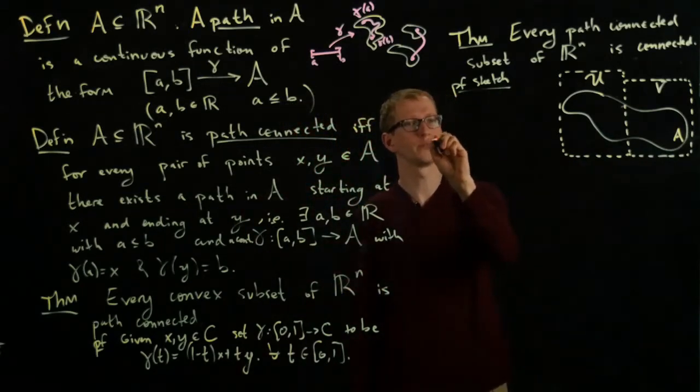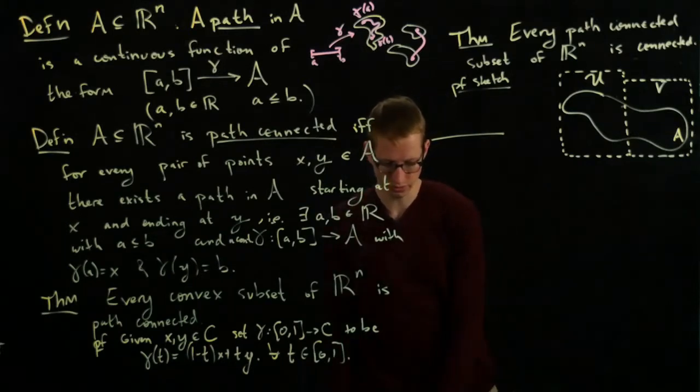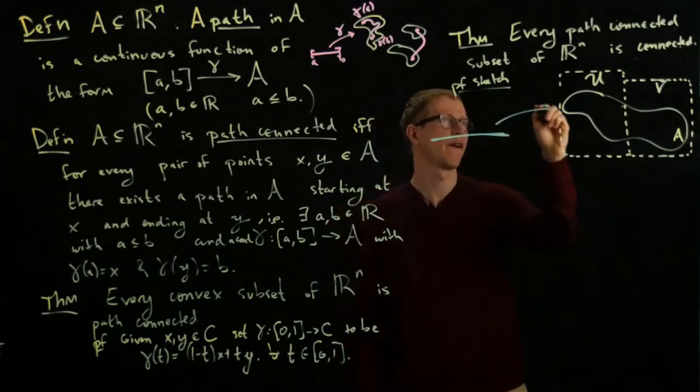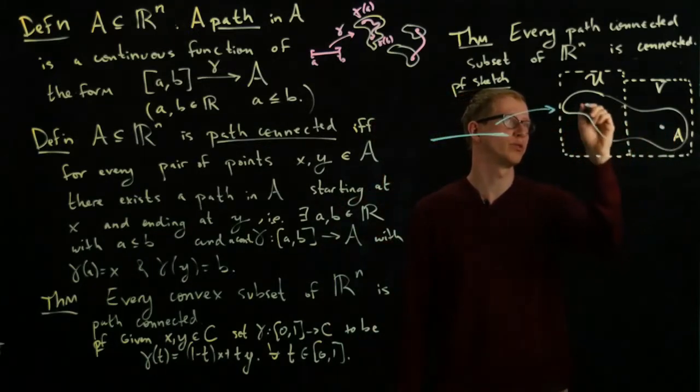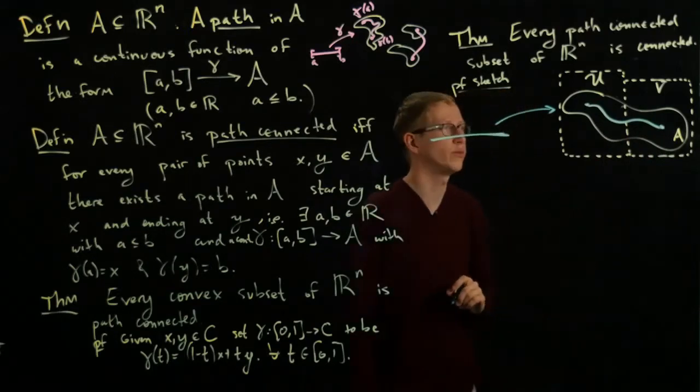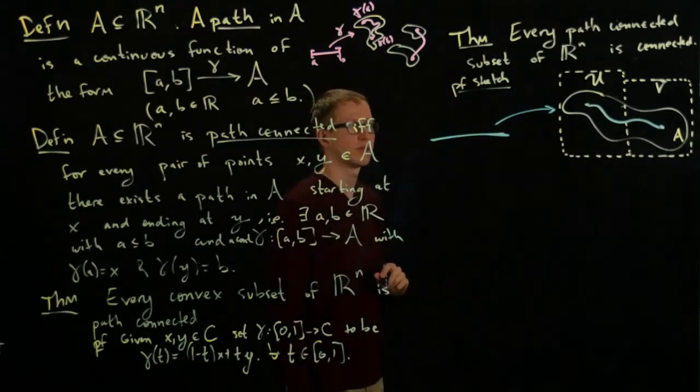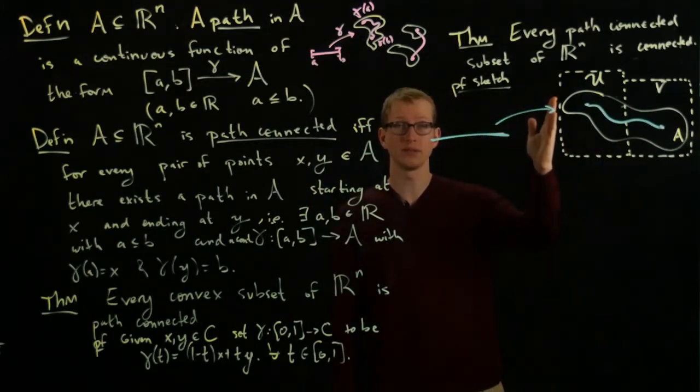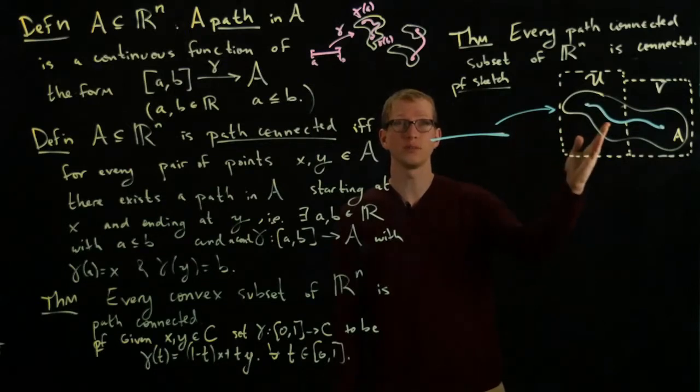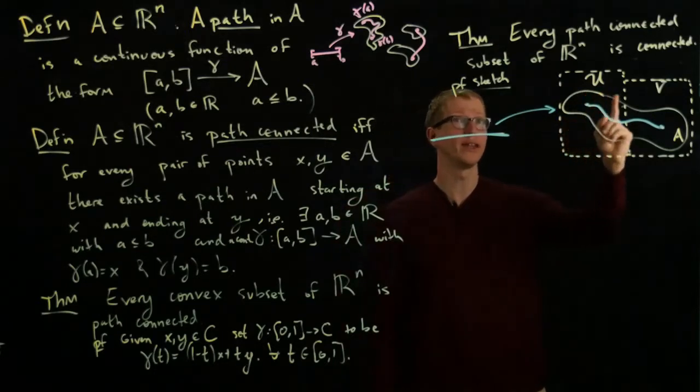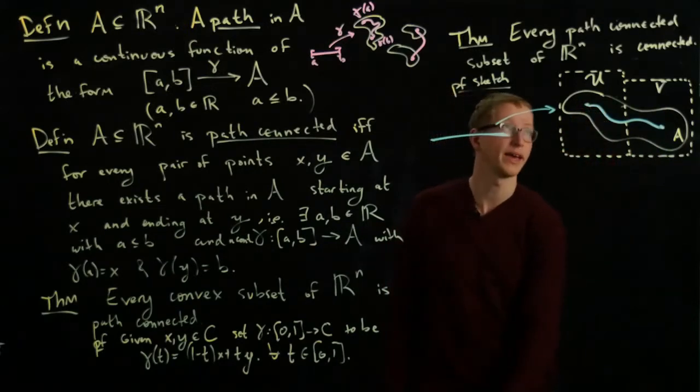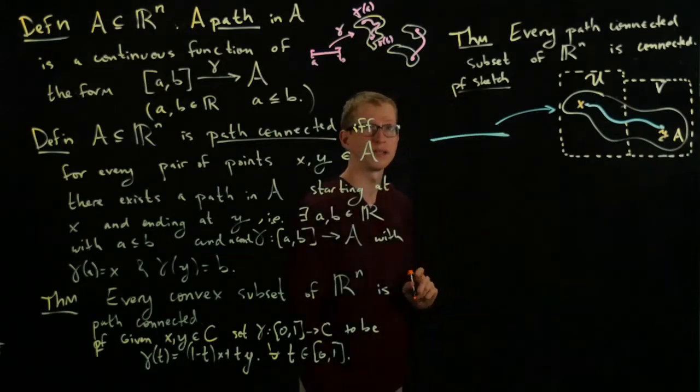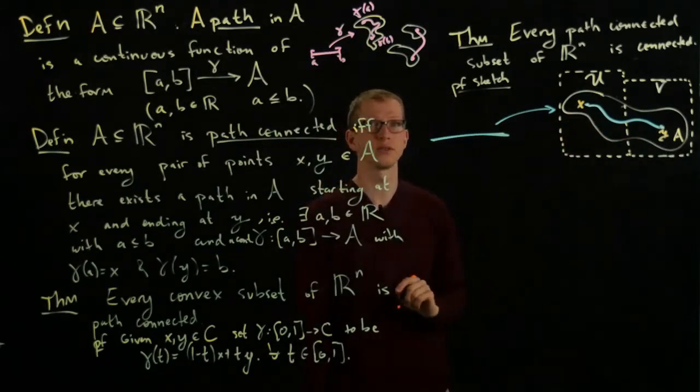And now suppose that I had a path, let's draw this in another color, a path in this set between two points, one in U and one in V. Remember, by assumption, because this subset is path connected, I know such a path exists between any two points. And because U and V are not empty, I know there exists some X here, and there exists some Y here. And by assumption, there exists a path from X to Y.